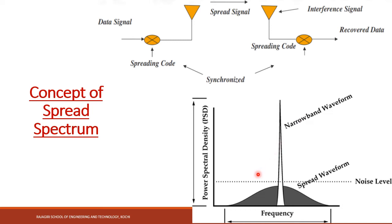This figure shows the variation of power spectral density. On modulating the information using spreading codes, the bandwidth of the narrow band information signal is widened and the power level of the transmitted signal reduces in such a way that it appears like noise. So the transmitted signal can thus propagate through the channel without being detected by anyone who may be listening.